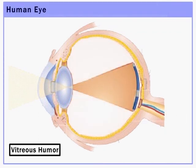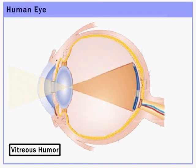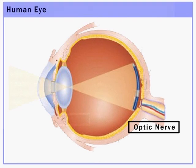This is the vitreous humor. It fills the space between the lens of the eye and the retina lining the back of the eye.